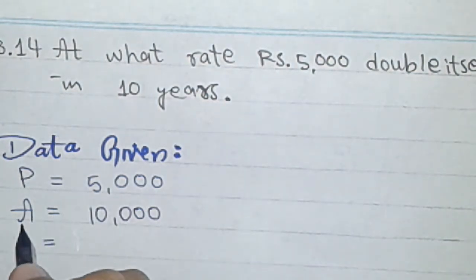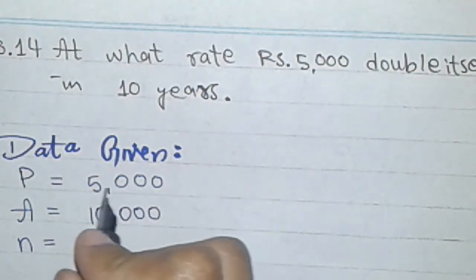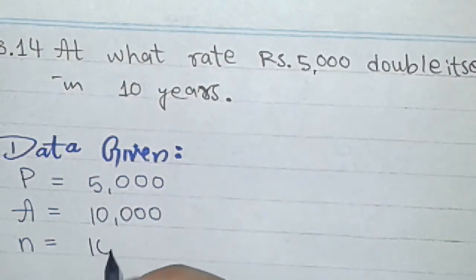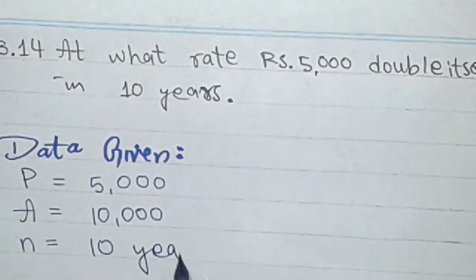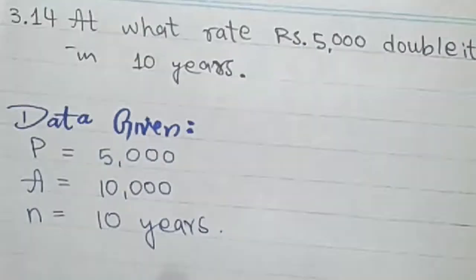Double itself means 10,000, the total amount. Principal amount and we know this is 10 years and we have to find rate. Let's find rate. So here is the formula: A equals to P open bracket 1 plus nr close bracket.